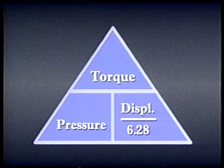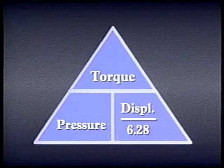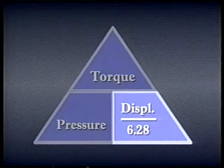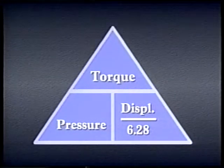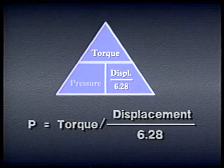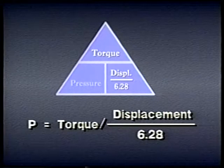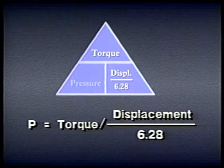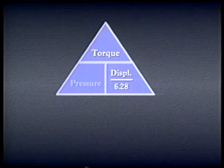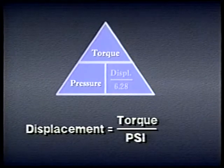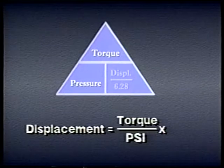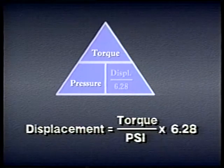The force triangle for linear actuators can be adapted for use with rotary actuators. For example, to find the pressure required to produce a specific torque, begin by dividing the displacement by the constant 6.28, then divide the torque by that number. Or, if we want to know the displacement required to produce a specific torque at a given pressure, divide the required torque by the pressure and multiply that number by 6.28.